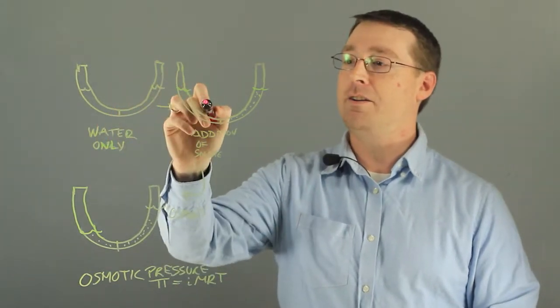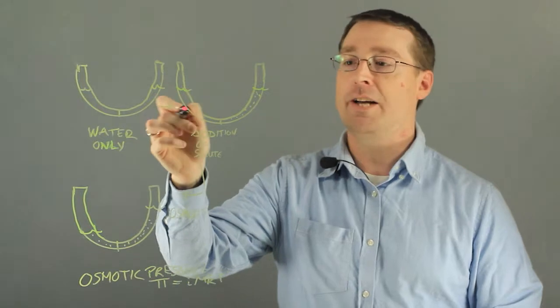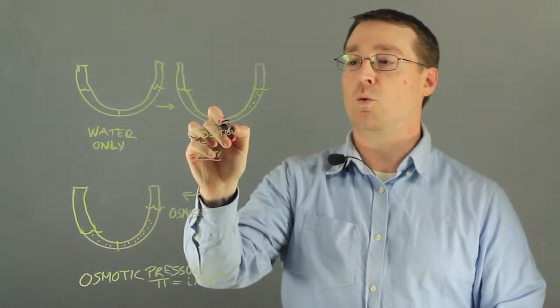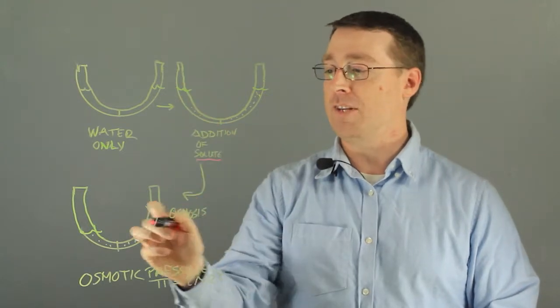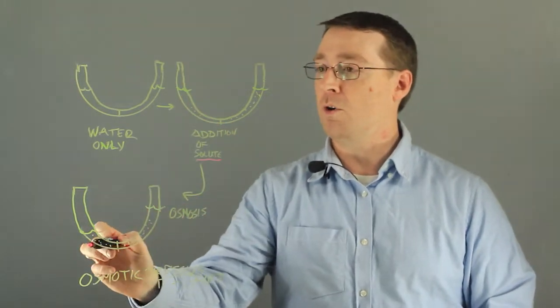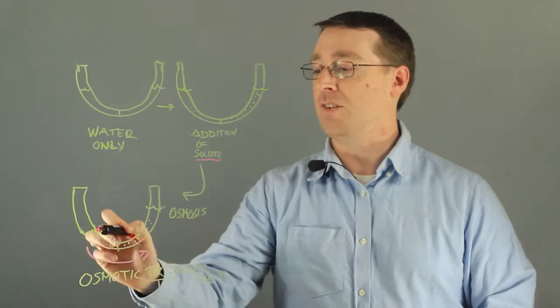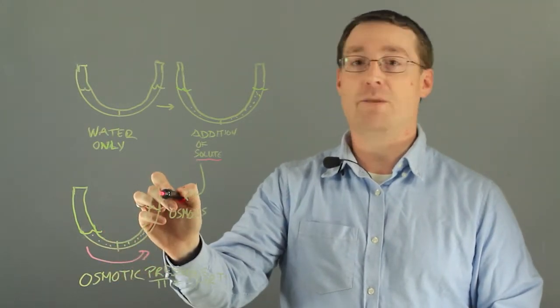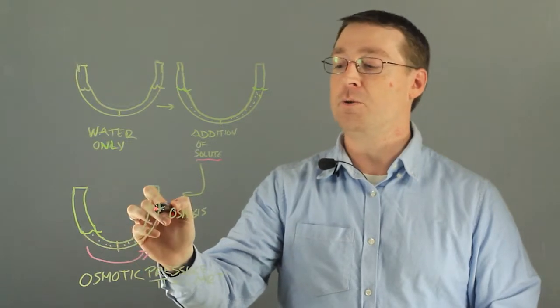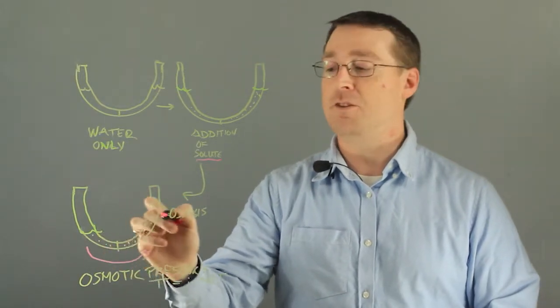So if we add sugar or any kind of solute to it but we put more on one side than on the other, what happens for osmosis is that more water will go from the left side into the right side and increase the volume of this right side in order to make the concentrations of the two sides equal.